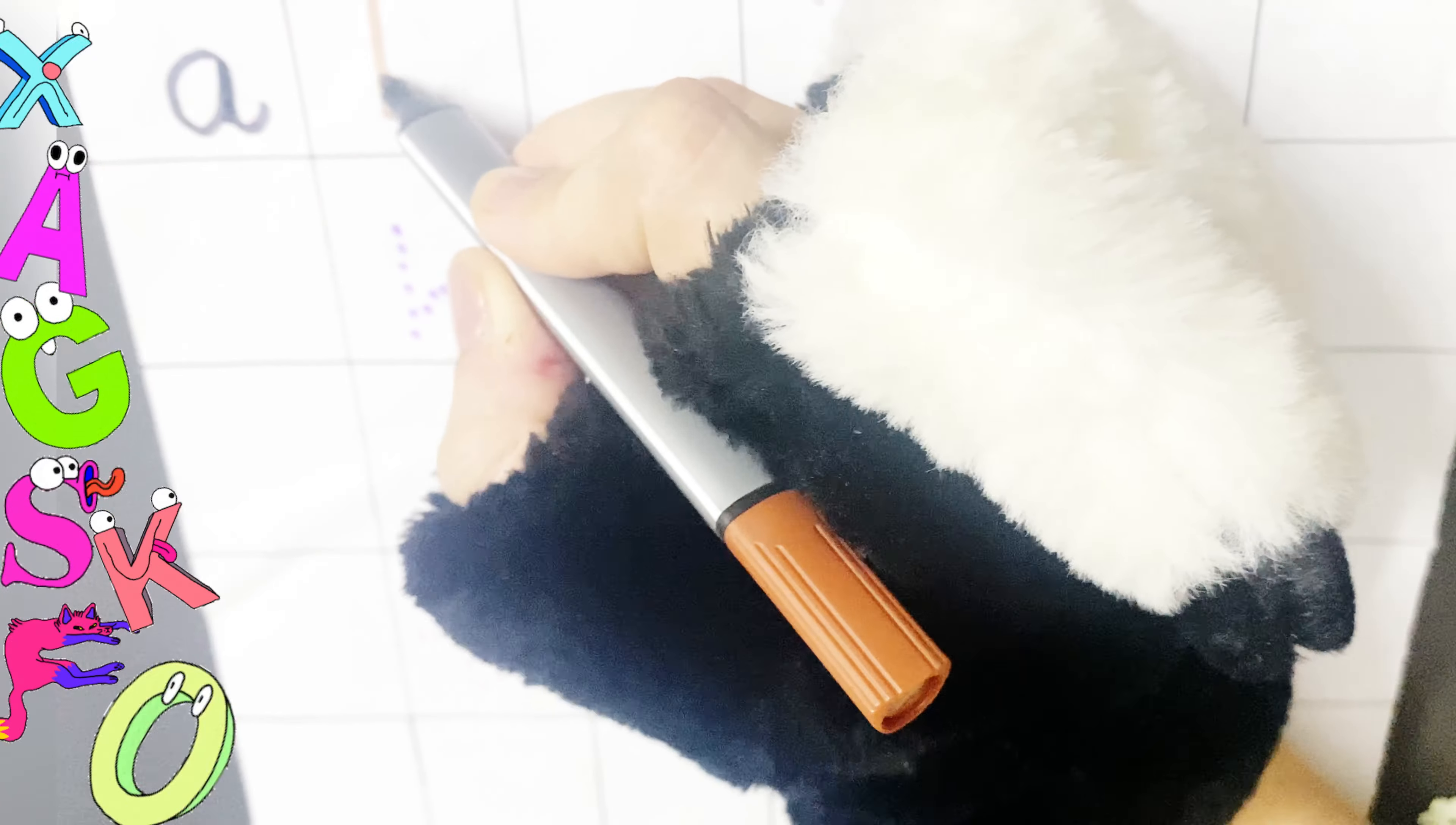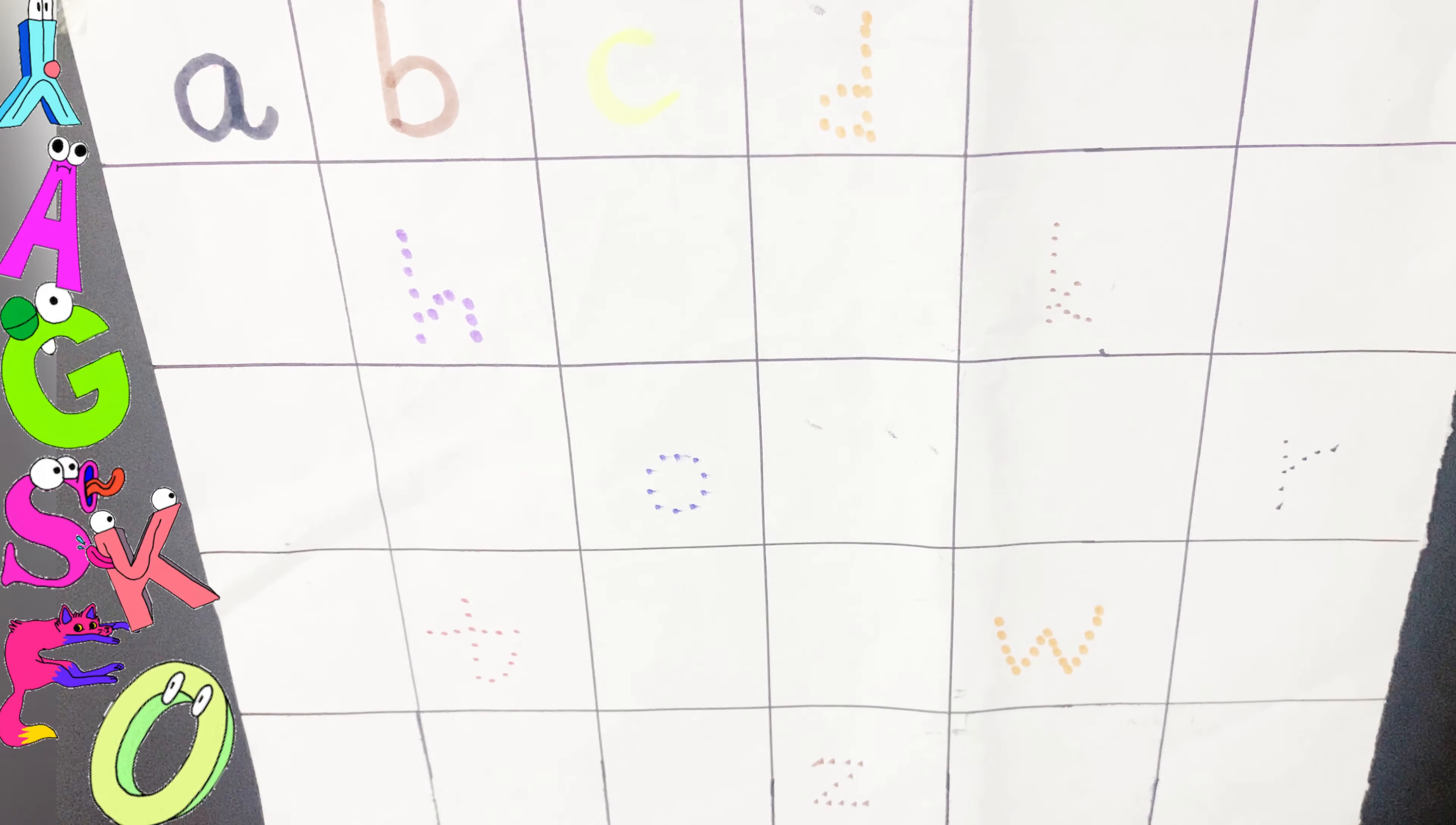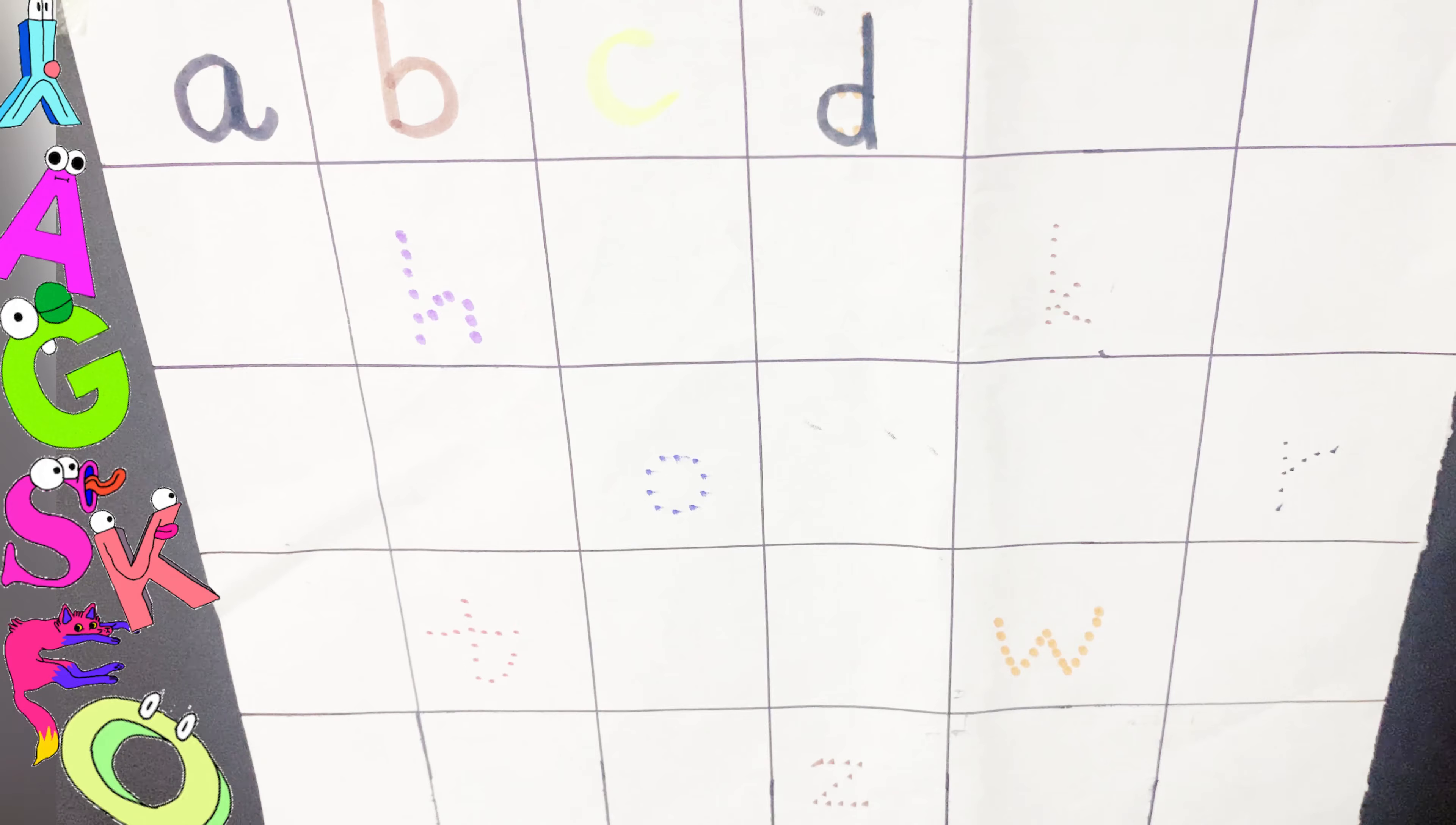B is for Ball. What comes after B? C is for Cat. D is for Dog. What comes after D?